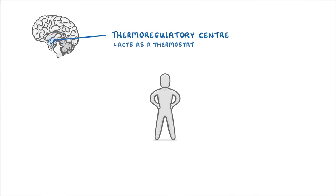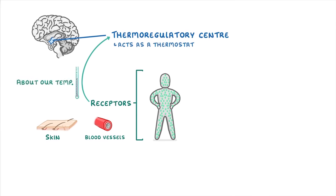To help it, we also have receptors throughout our body, which are tiny things that detect changes in body temperature, with most of them being found in the skin and our blood vessels. By constantly sending information about our temperature to the thermoregulatory centre, the brain is able to figure out if we're too hot or too cold overall.